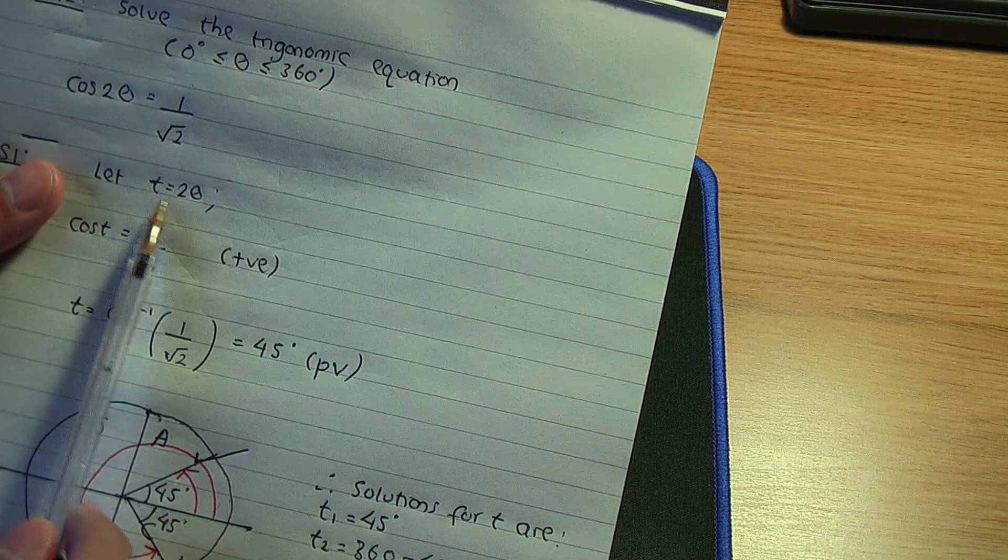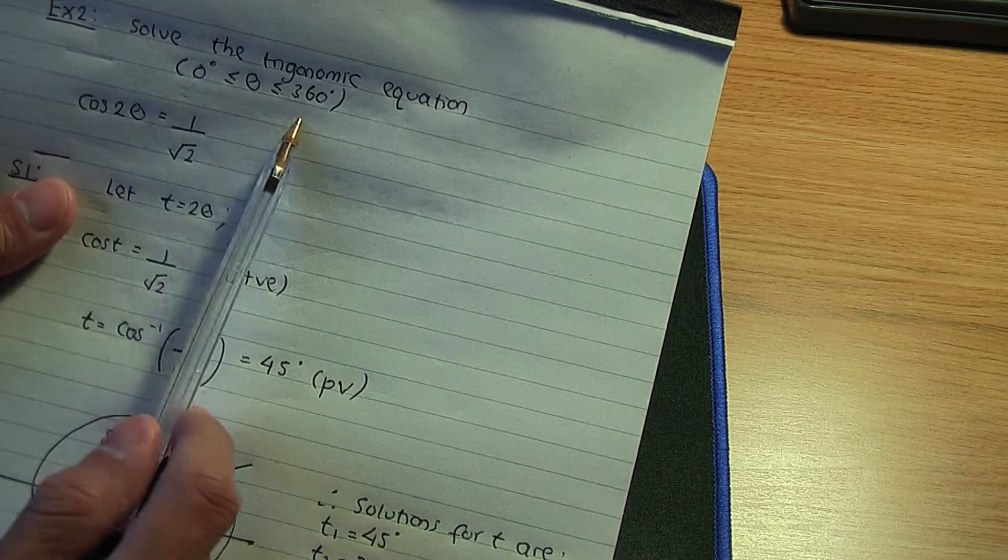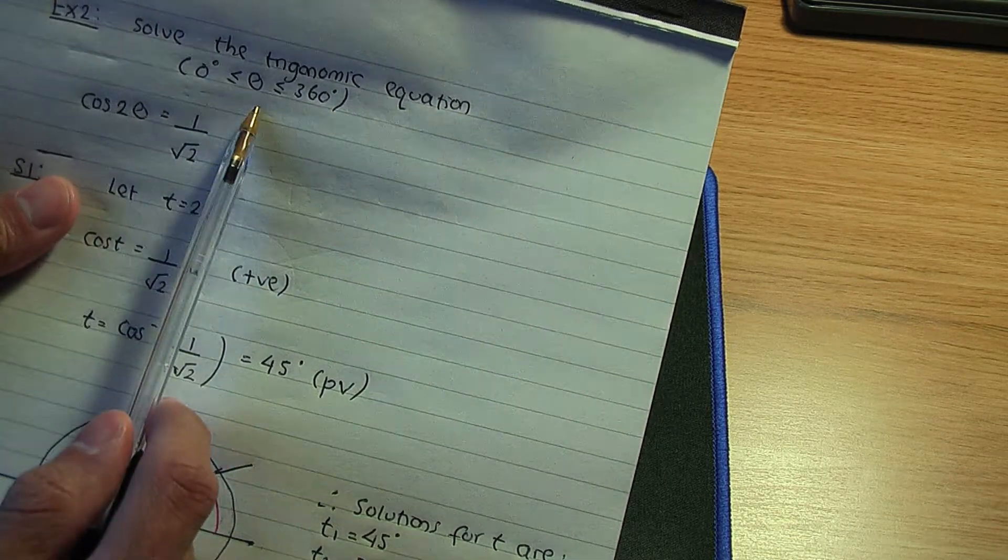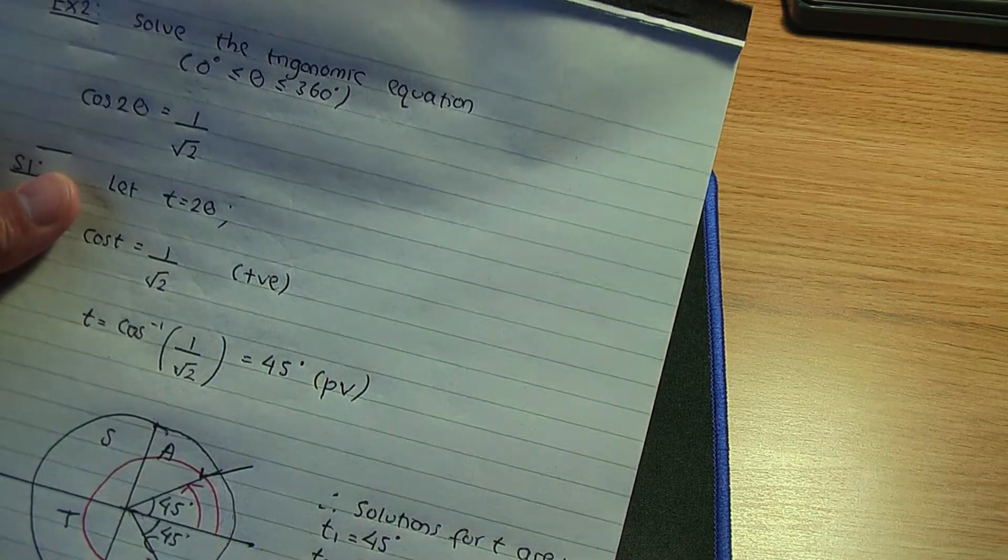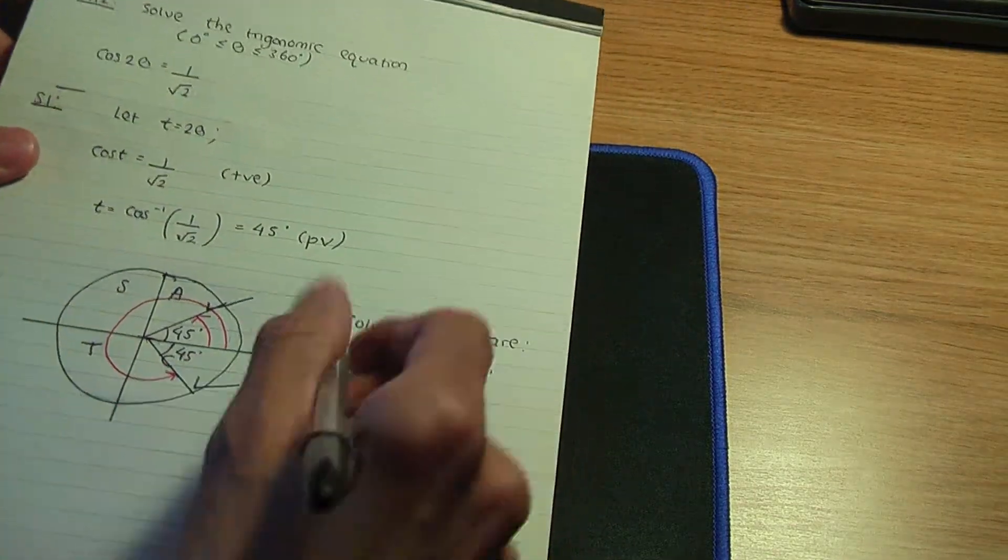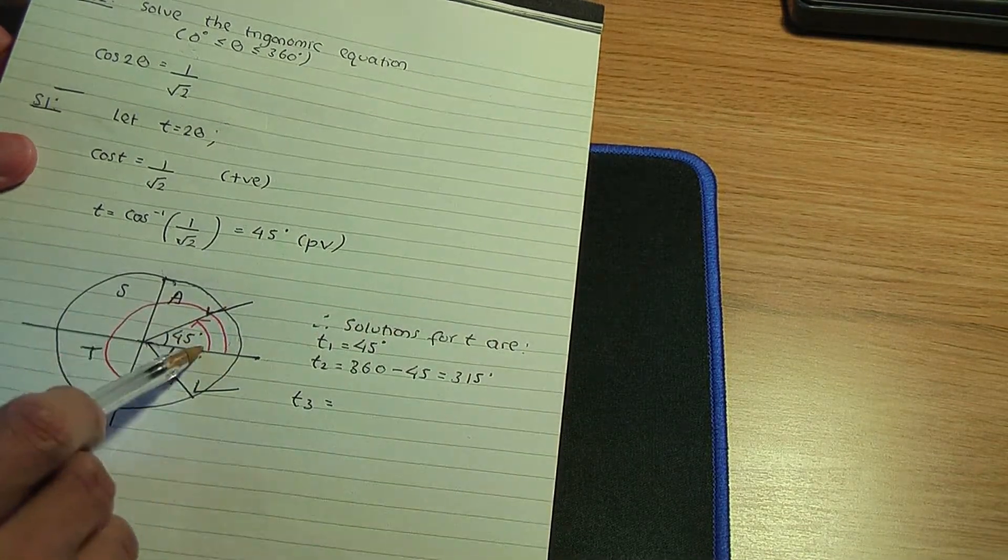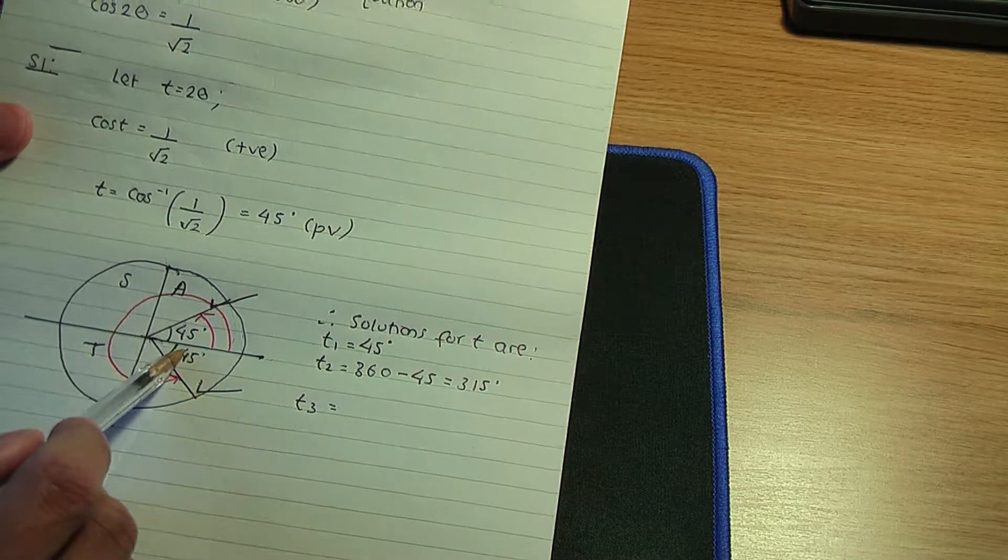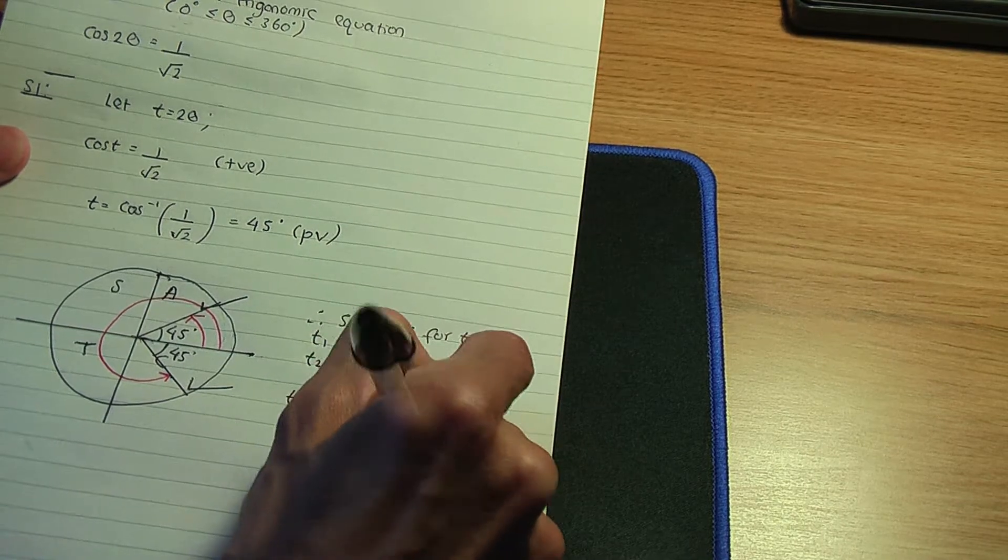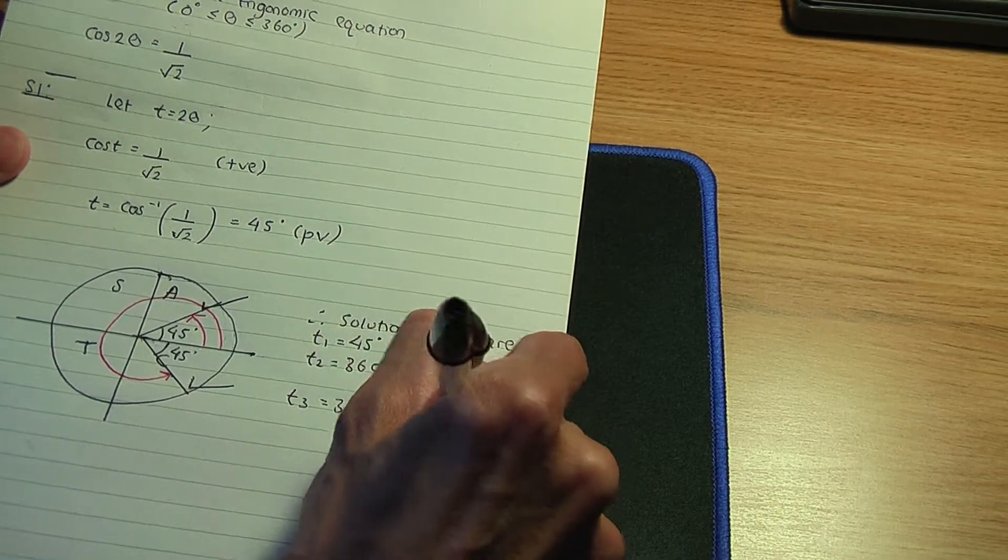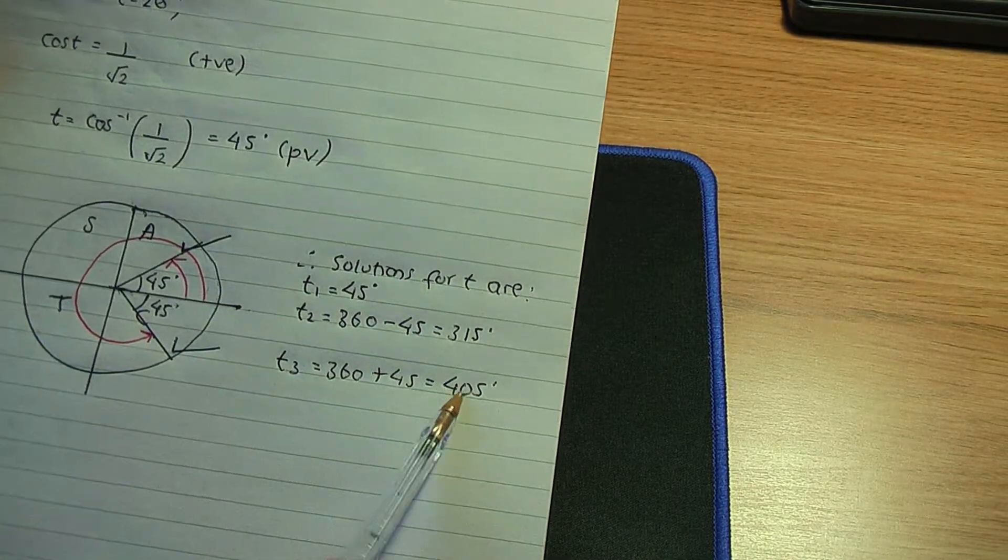To work out theta we'll be calculating t divided by 2, and remember the range also, so keep this in your mind. So let's calculate some more.